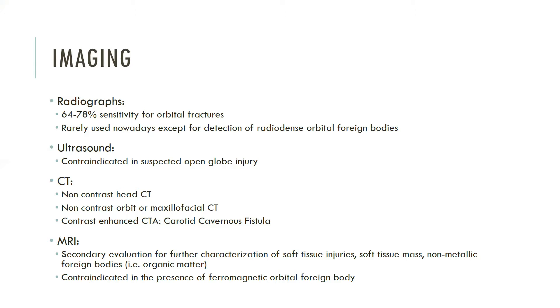MRI offers superior soft tissue contrast resolution without the use of ionizing radiation. However, it is more time consuming, less readily available in the emergency setting, and is contraindicated in the presence of a ferromagnetic orbital foreign body. While MRI is not ideal for the primary evaluation of orbital trauma, it is invaluable as a secondary modality for further characterization of orbital soft tissue injuries, including optic nerve trauma and evaluation for non-metallic foreign bodies, especially organic matter such as wood.